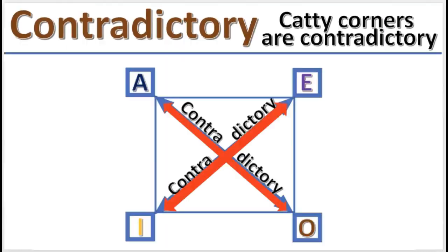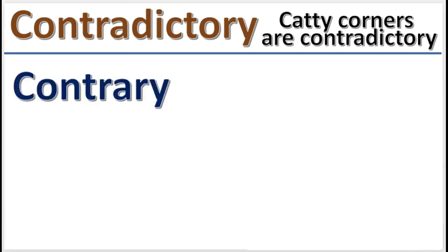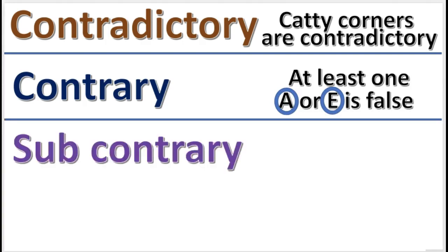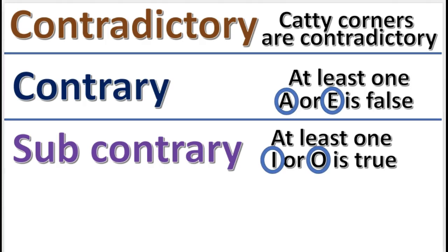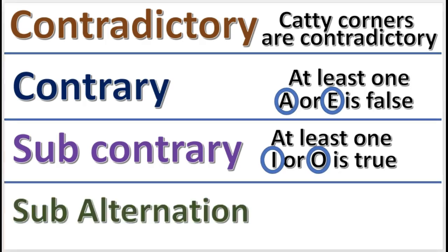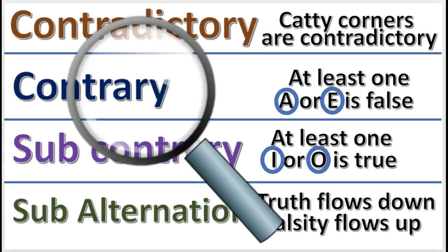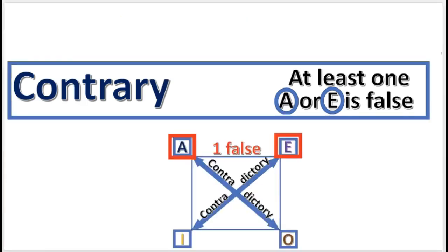Contradictory means catty corners are contradictory. Contrary means at least one A or E is false. Subcontrary means at least one I or O is true. And subalternation means truth flows down and falsity flows up. Let's look at each relation in more detail. Contrary: at least one A or E is false.